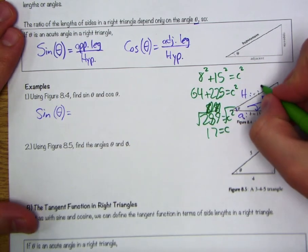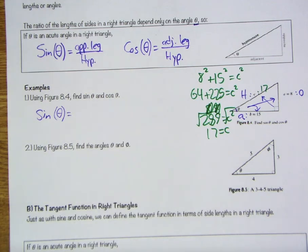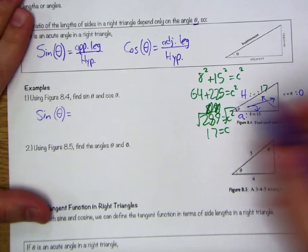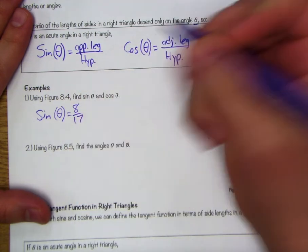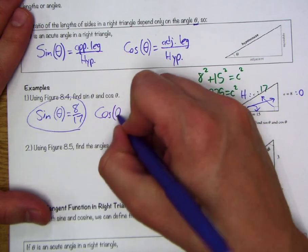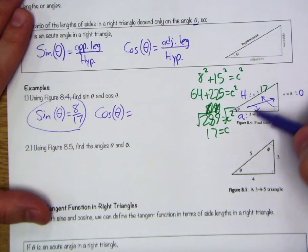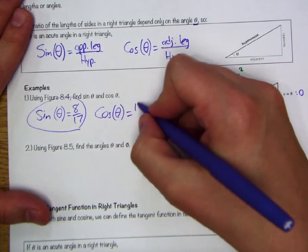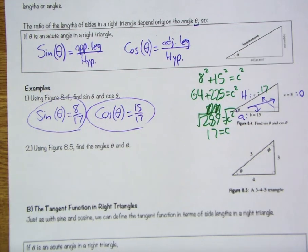So that is going to round out our ratio here. Sine of theta is going to be equal to the opposite of 8 divided by the hypotenuse of 17. Let's do the same for cosine. Cosine of theta, being our adjacent divided by hypotenuse, is going to be 15 divided by 17. Pretty straightforward. Now see if you can do the next problem on your own.